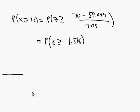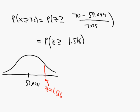So in terms of an area, here's what it looks like. Here's our normal distribution. We have our mean of 59.044 in the middle. And we know that we're a full 1.5 standard deviations above the mean. And we would like the area above that to get our desired probability.